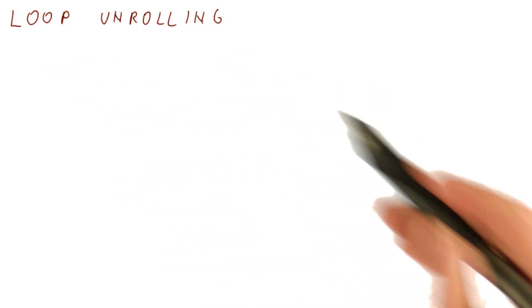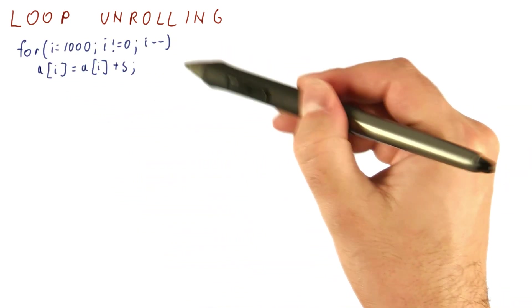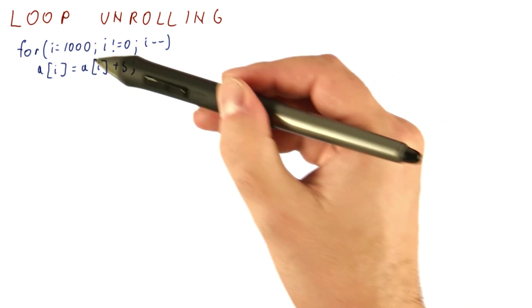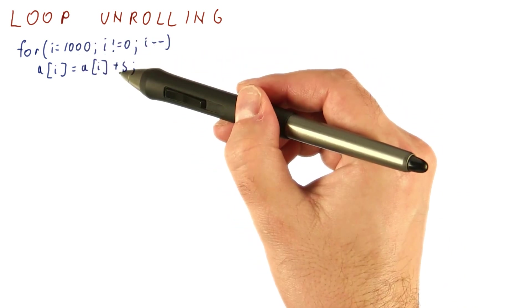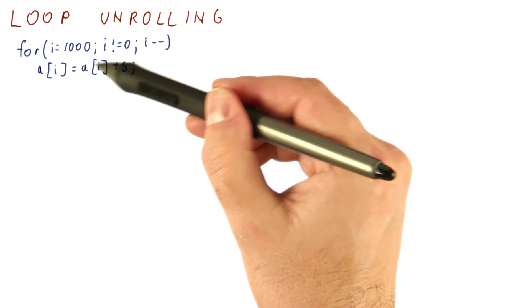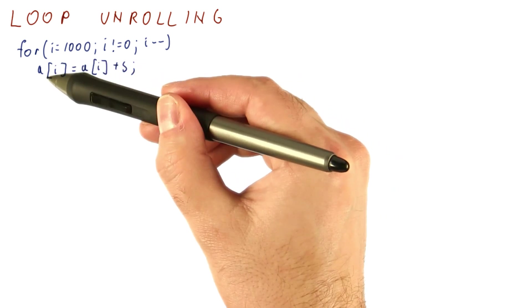Now we will see how loop unrolling works. Suppose we have this loop in the C language where i goes from 1,000 down to 0. And in each iteration of the loop, we add something to the ith element of the array a.